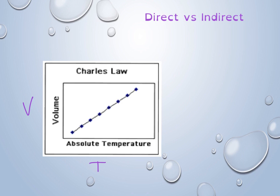And you can see if we were to pick a point here, we have a volume that is low, and we have a temperature that is also low. And if we were to pick the point here, we can see that we have a volume that is high, and we have a temperature that is high.